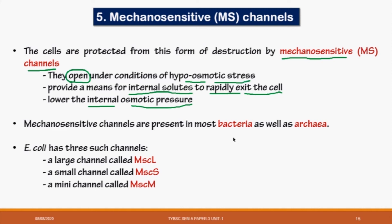So in the process of hypo-osmotic stress, the cell opens its mechanosensitive channels and allows internal solutes to rapidly exit the cell, thus lowering the osmotic pressure. Mechanosensitive channels are present in bacteria as well as in Archaea — primitive bacteria present in extreme conditions like thermophiles, halophiles, and methanogens.